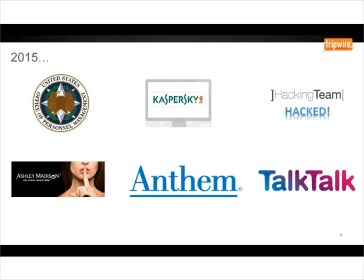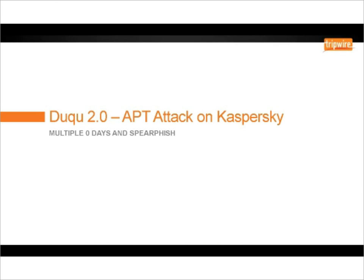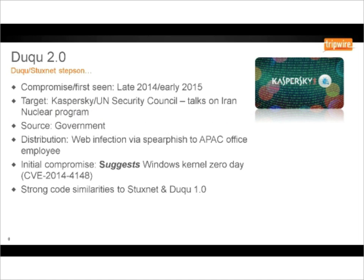Today I'd like to focus on a couple of attacks. The APT attack on Kaspersky Labs was a very sophisticated attack, and the reason for its sophistication was how it leveraged multiple zero-day attacks. A zero-day is an exploit that has never been seen before, taking advantage of a vulnerability that nobody knows about. To leverage an exploit like that costs a lot of money, making it very sophisticated in terms of attack methodology. We believe Kaspersky were infected via a spearphish to an employee in AsiaPac.